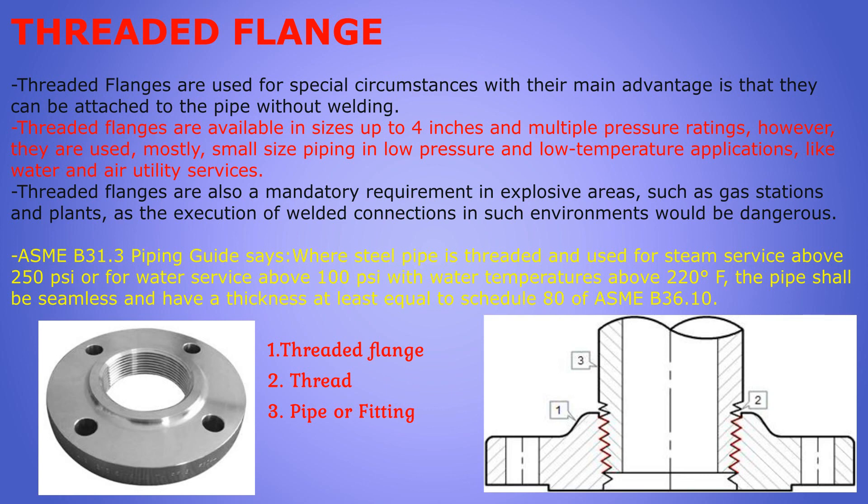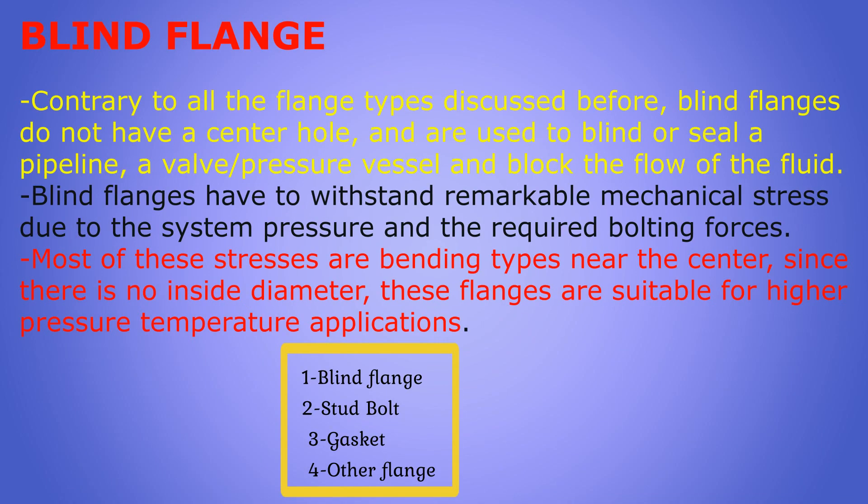As per ASME B31.3 piping guide, where steel piping is threaded and used for steam service above 250 psi or for water service above 100 psi with water temperature above 220°F, the pipe shall be seamless and have a thickness at least equal to Schedule 80 of ASME B36.10.